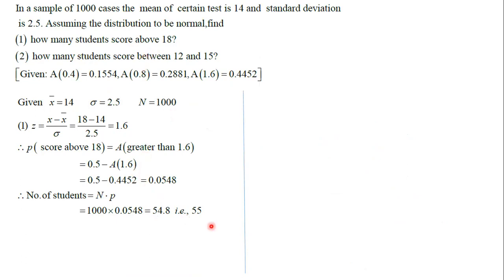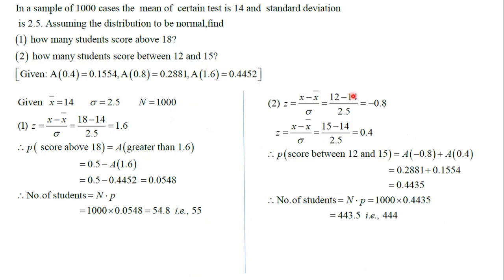So 55 students will be there. Likewise, between 12 and 15, this gives -0.8 and 0.4. Add these, which is 0.4435, that means 443.5. So these are some of the examples of normal distribution.